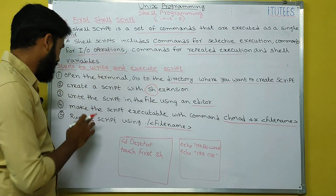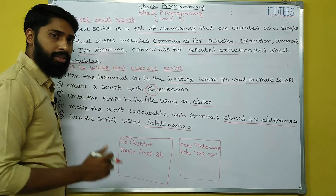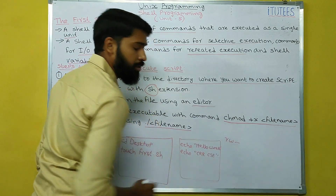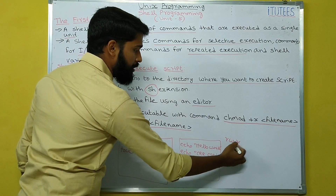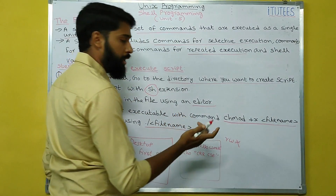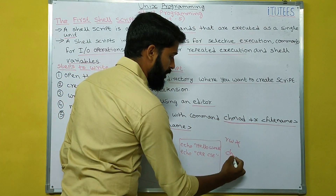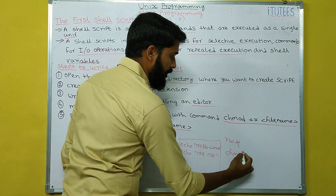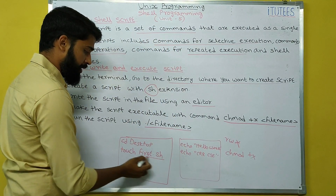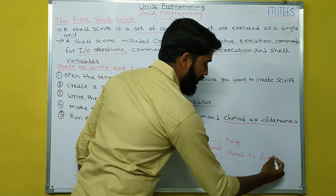The fourth step is make the script executable. When you create this file, the user has read and write permissions only — they don't have execution permission. So first you are going to grant the execution permission by using chmod +x first.sh.